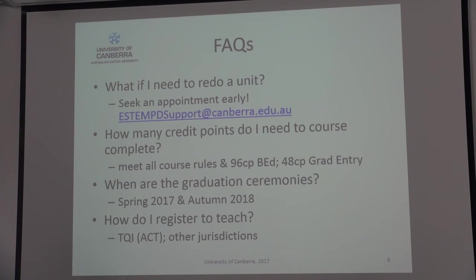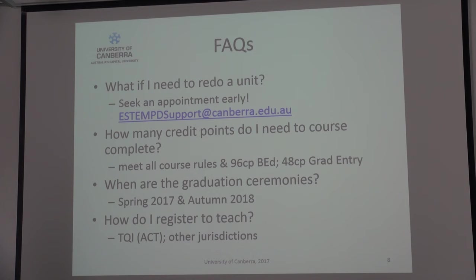These are the common questions we get through course advice and in the faculty — a lot of them are structural questions. What happens if you need to redo something — a unit? You've got a withheld, an NX, an NC, or a fail grade. Seek an appointment with me as soon as possible to work out the best solution. It may be there's another offering of a similar type in another teaching period this year. If all things go awry, there is the opportunity to transition you into the new degree in a similar structure, bringing all your credit across. That would be the worst case scenario, but those things are possible.